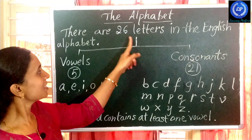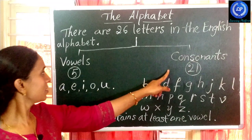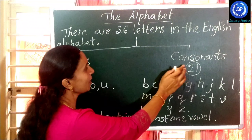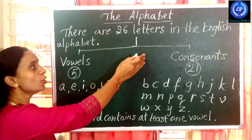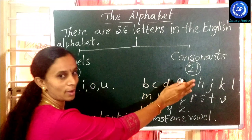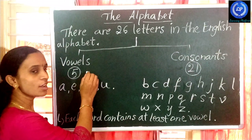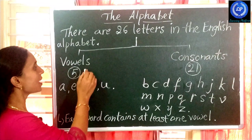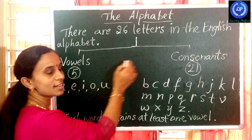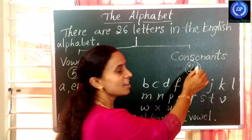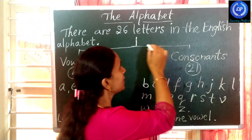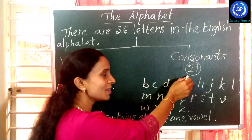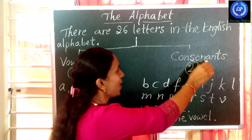Those 26 letters are divided into two parts: vowels and consonants. In these 26 letters, there are five vowels and the rest — 21 letters — are consonants.